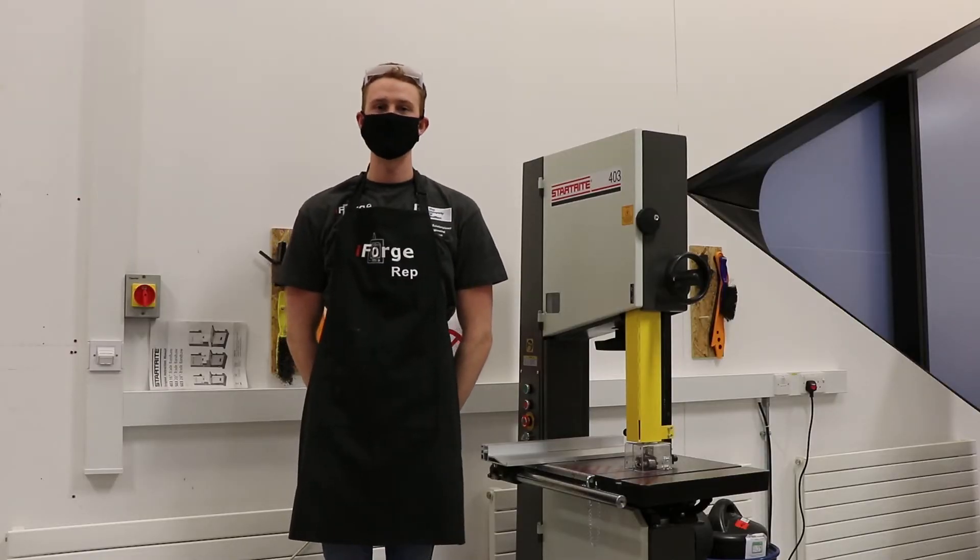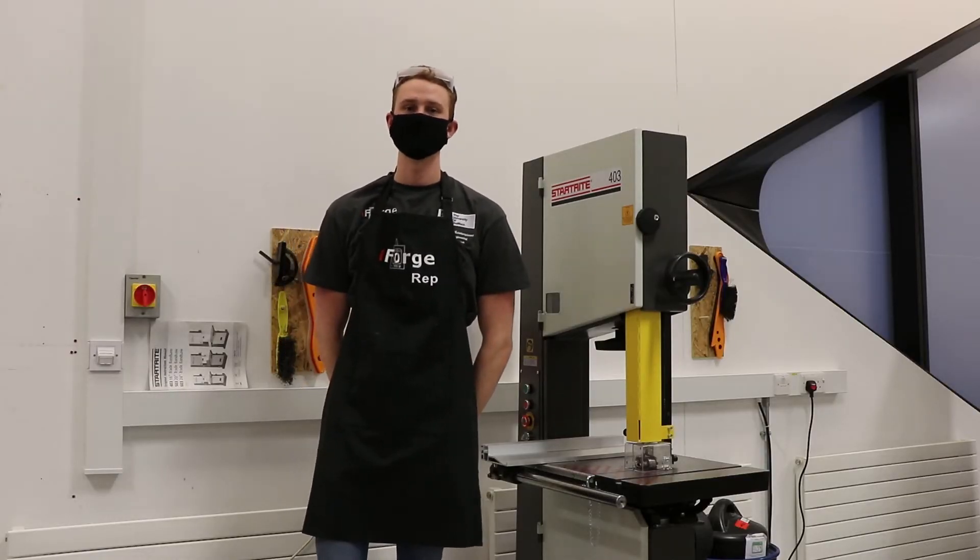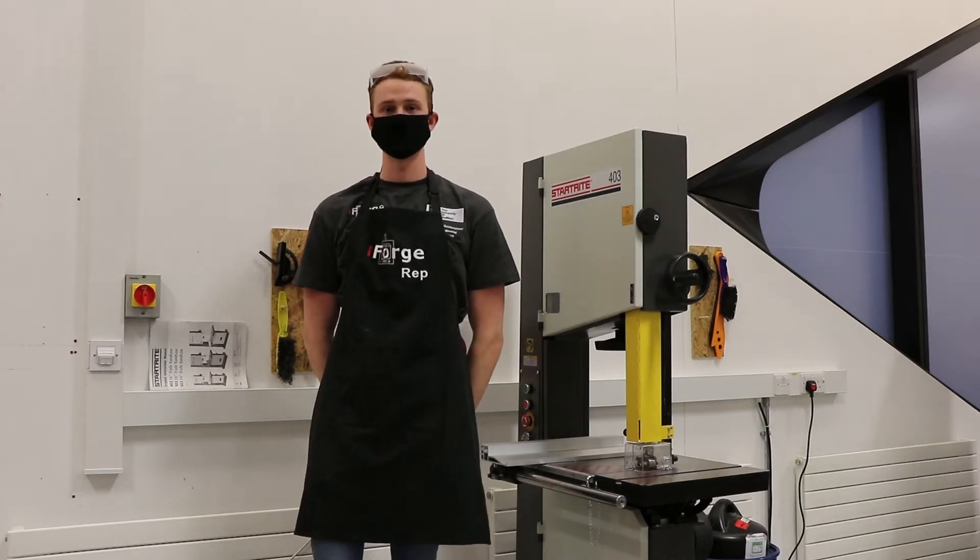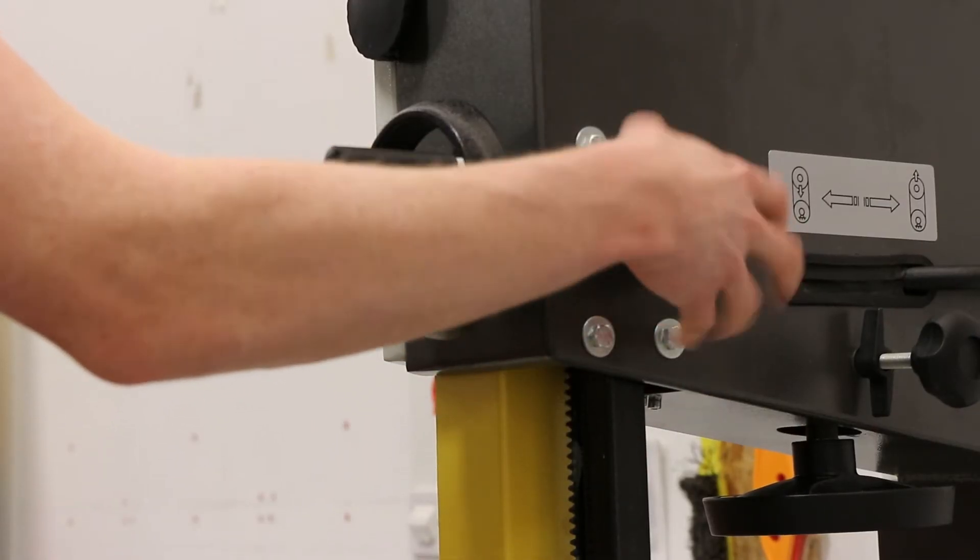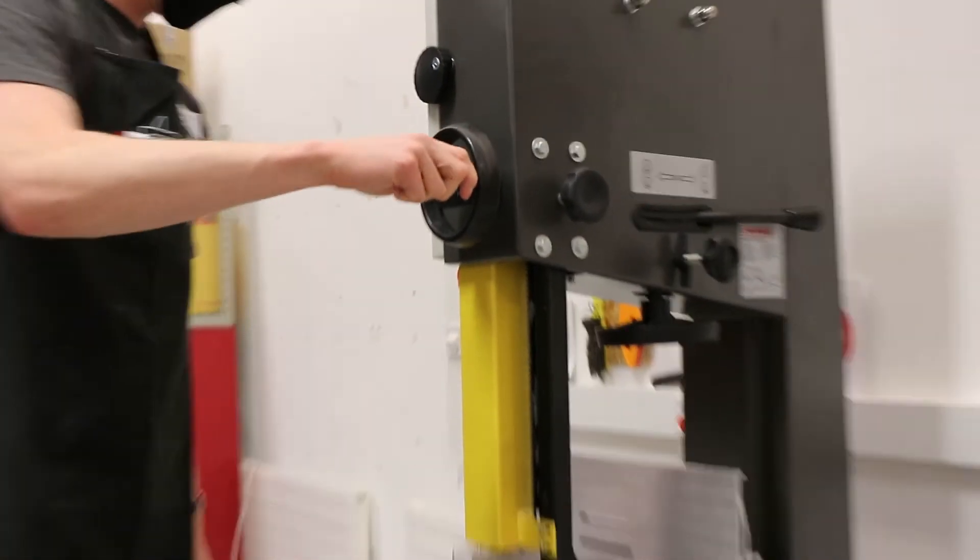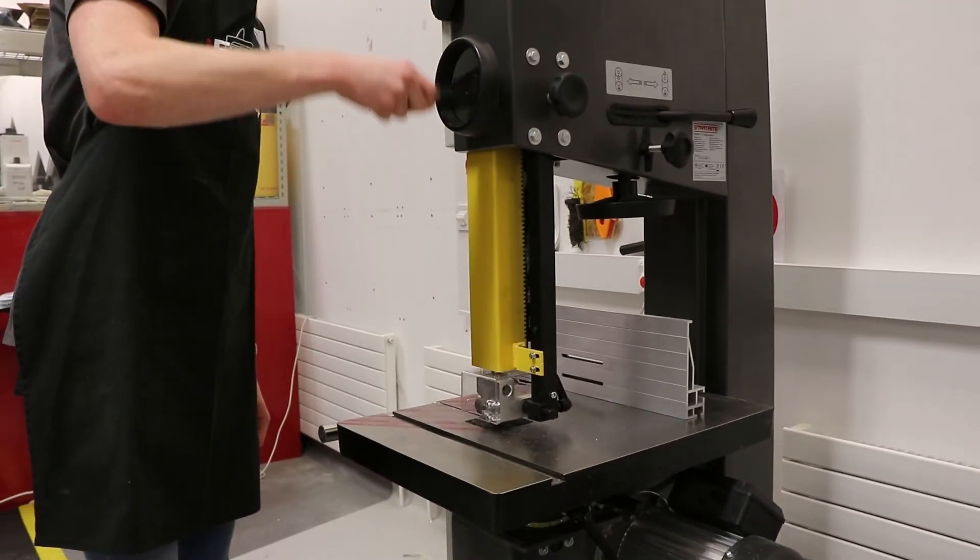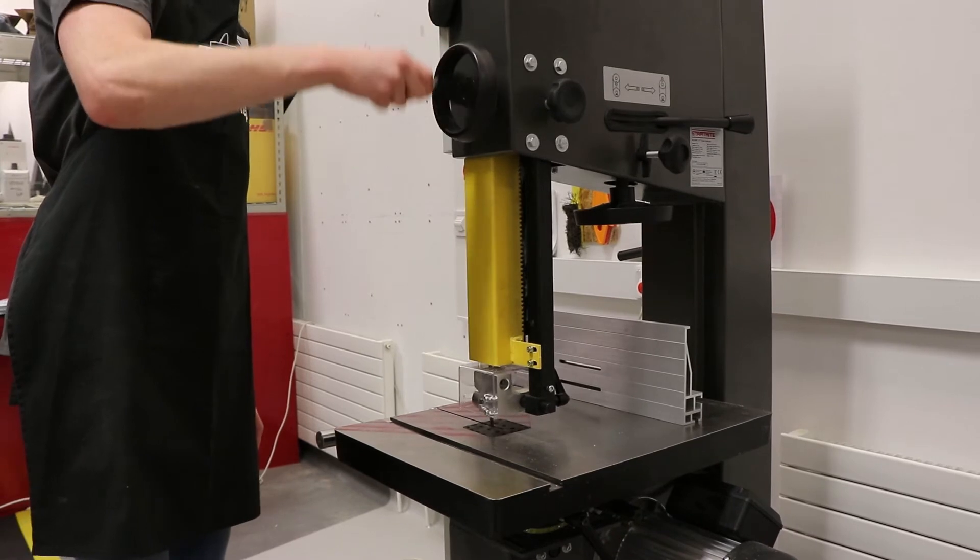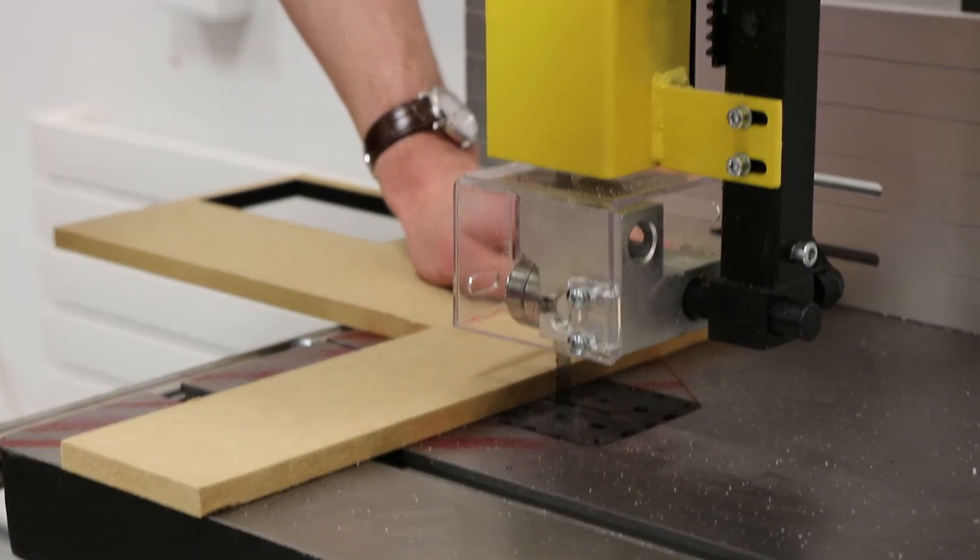Before using the bandsaw you will need to familiarize yourself with the operation of the machine and its safety systems. The blade is guarded by a blade guide. This guide should be adjusted to allow the material to slide underneath while keeping a maximum distance of one centimeter between the top of the material and the bottom of the guide.